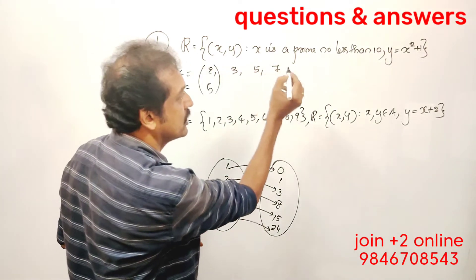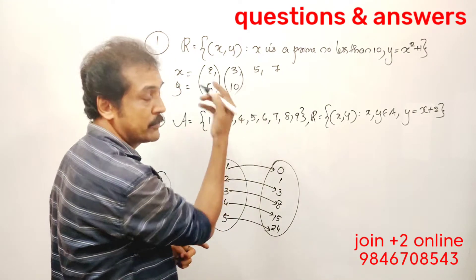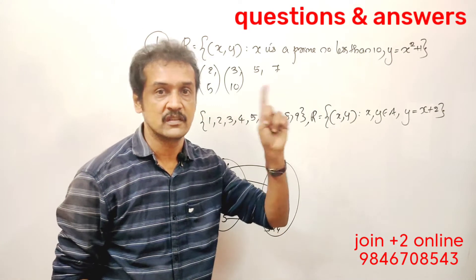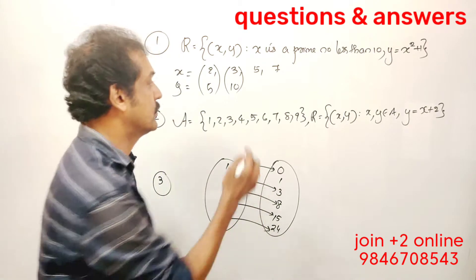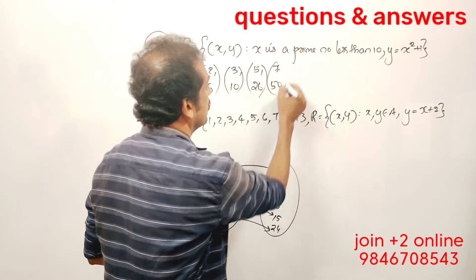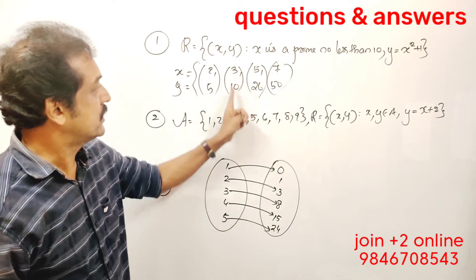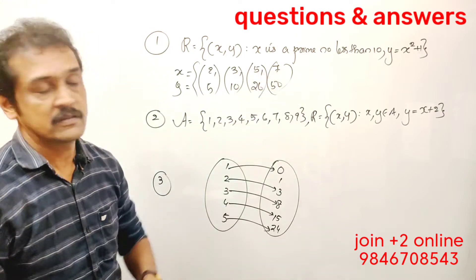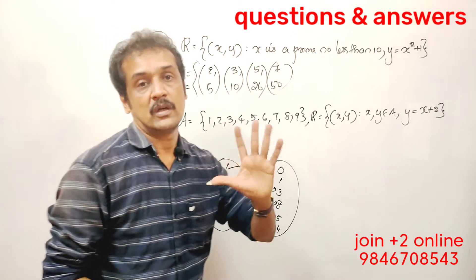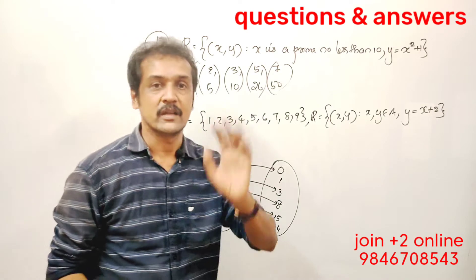For x = 3: 3 squared plus 1 = 9 + 1 = 10. For x = 5: 5 squared plus 1 = 25 + 1 = 26. For x = 7: 7 squared plus 1 = 49 + 1 = 50. The ordered pairs are (2, 5), (3, 10), (5, 26), (7, 50). Domain is {2, 3, 5, 7} and range is {5, 10, 26, 50}.